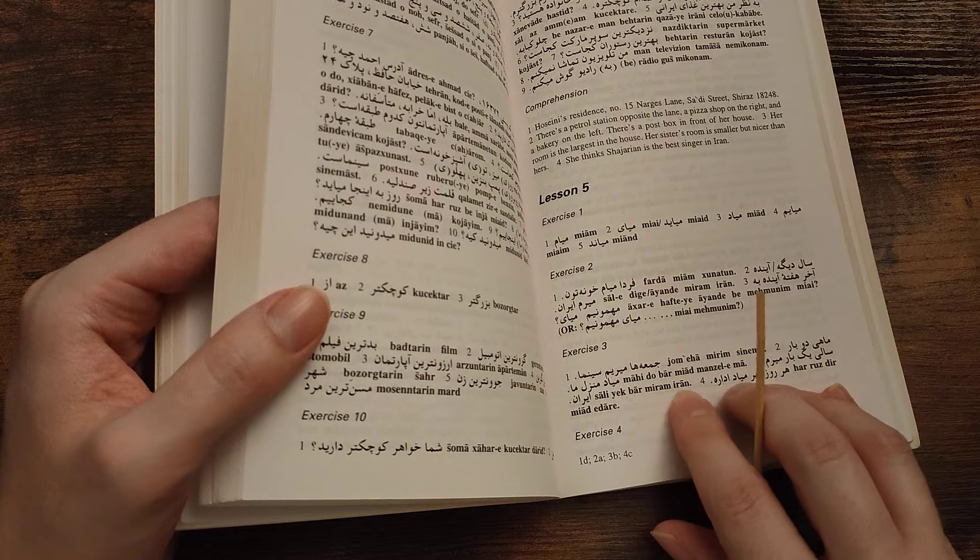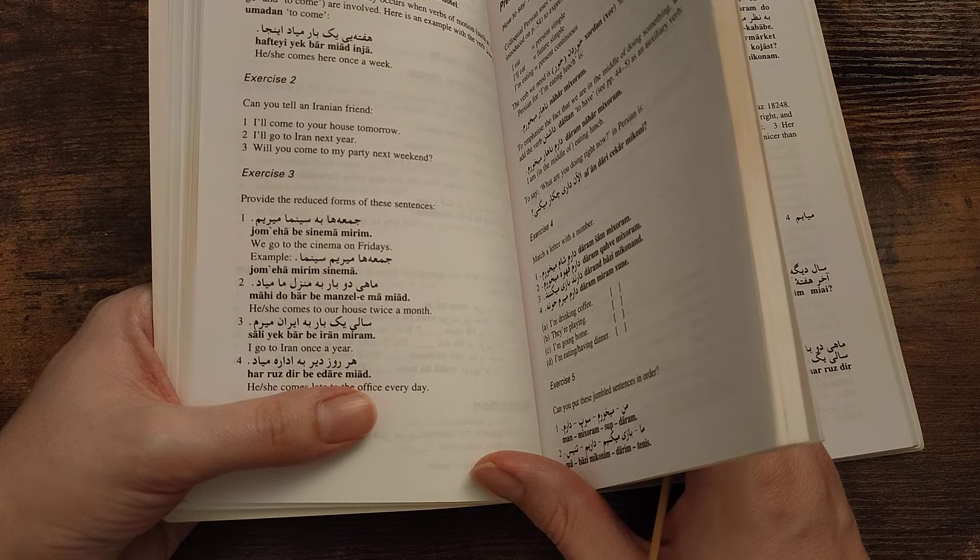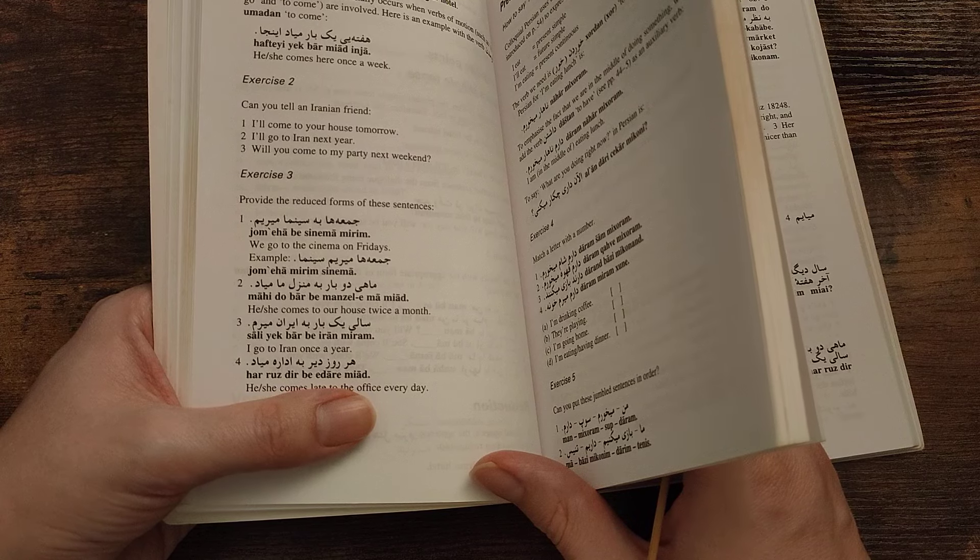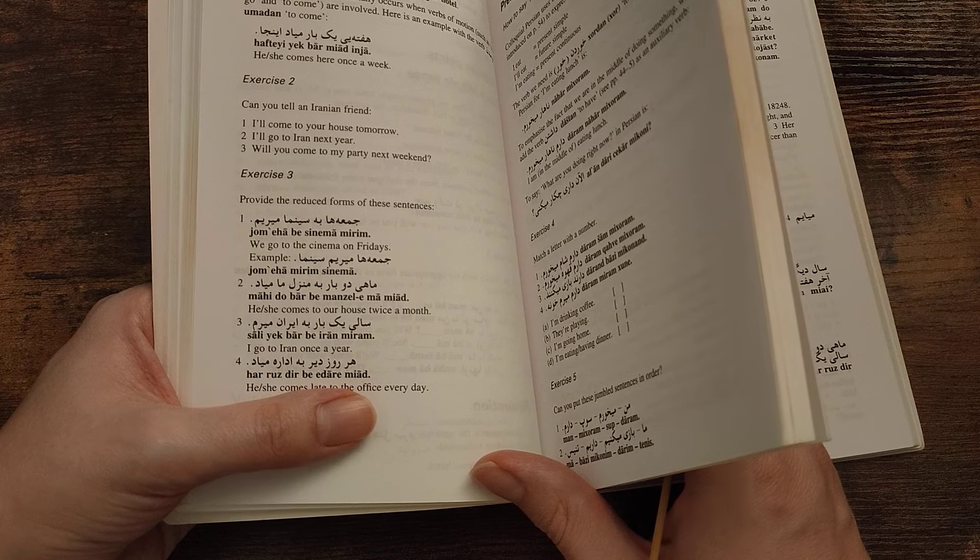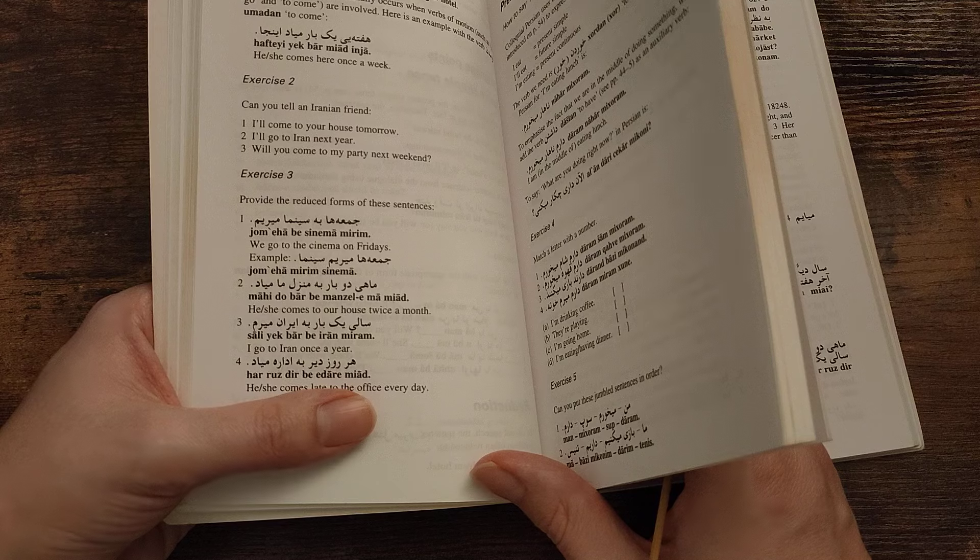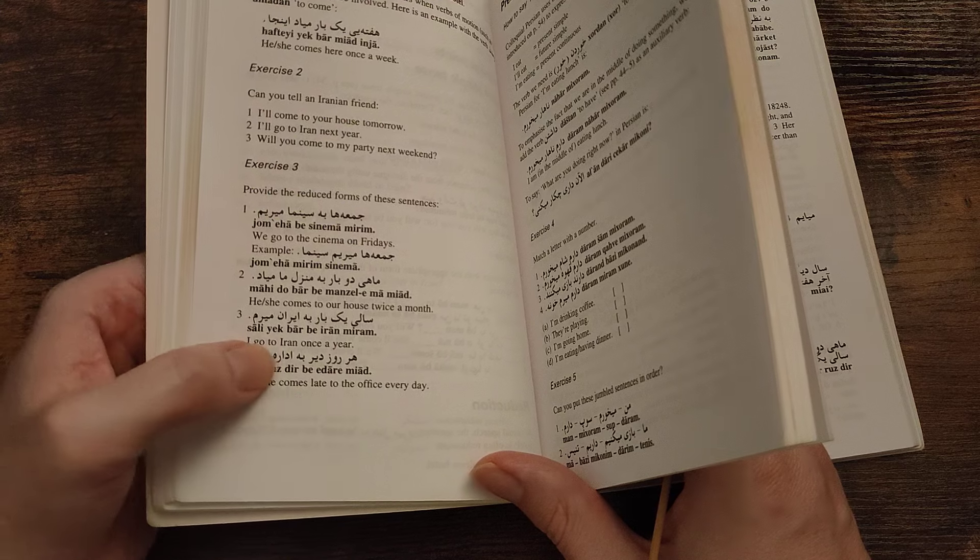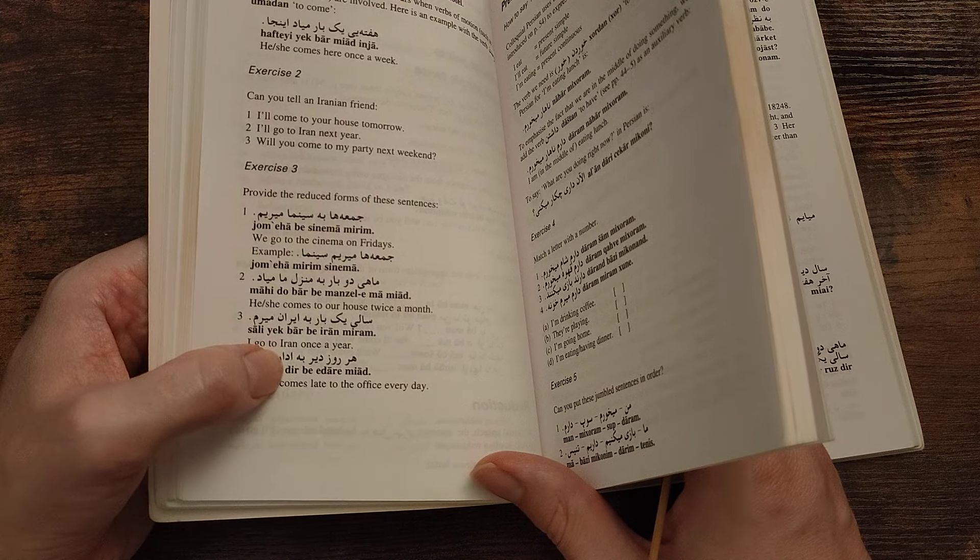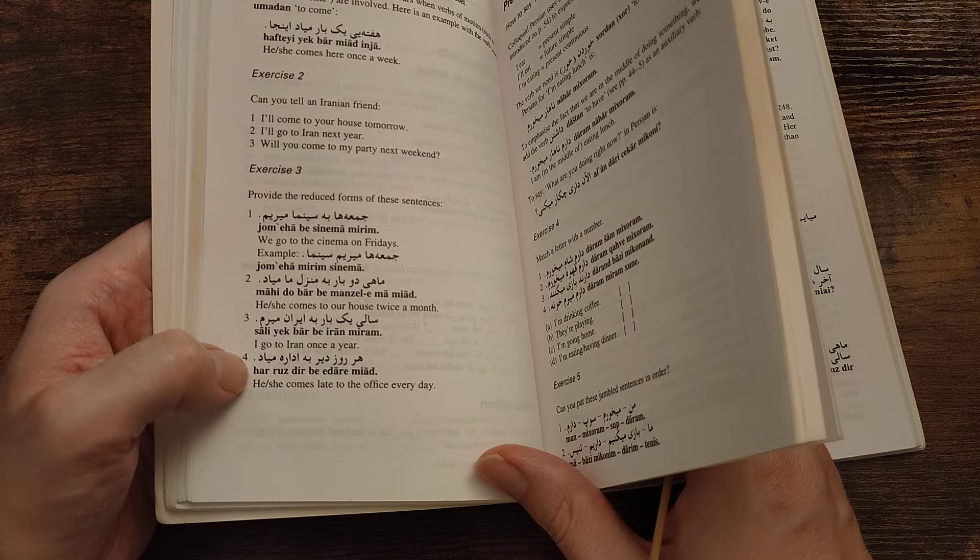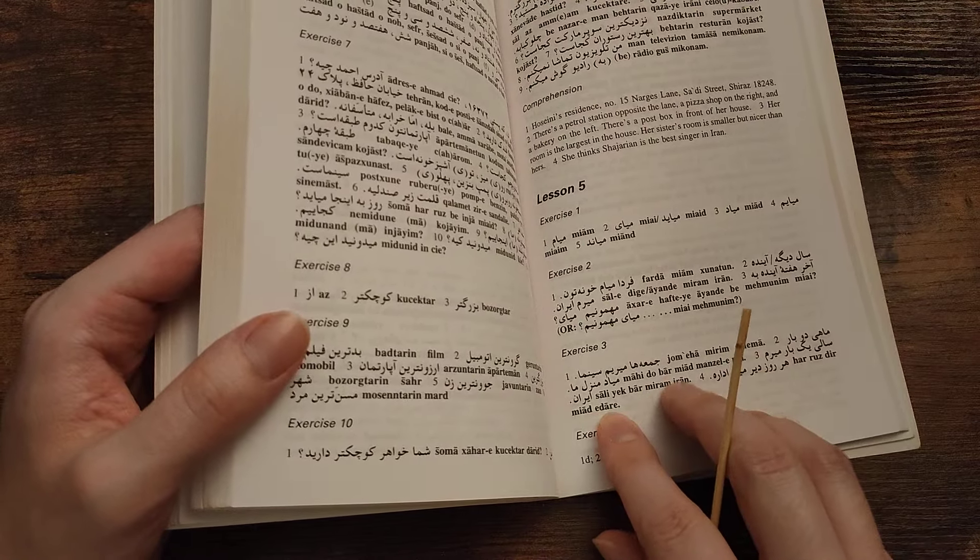Then, har ruz dir be edare miyad. Har ruz is every day, I think. Dir, don't have a clue what dir is. Be edare miyad. He or she comes to edare, whatever that is. He or she comes late to the office. Dir is late. Dir be edare. Edare is the office. So har ruz dir miyad edare. Har ruz dir miyad edare. Okay, I get that at least.